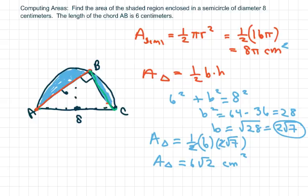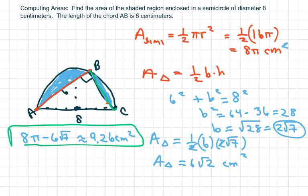Now all we have to do is subtract the area of the triangle from the area of the semicircle. The shaded region is going to be the area of the semicircle, which is 8π, minus 6√7. And use your calculator, so you get 9.26 centimeters squared. So I just subtracted this area minus this area.